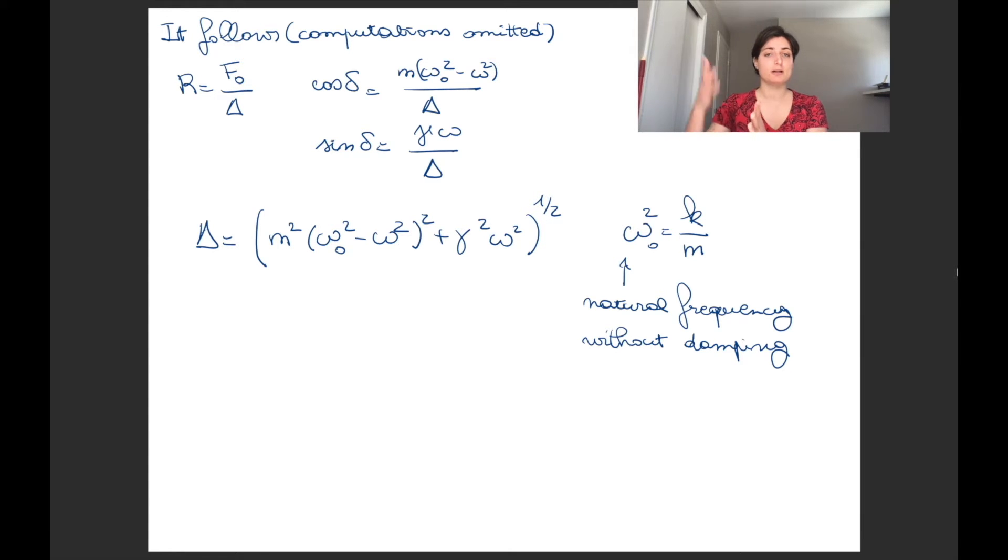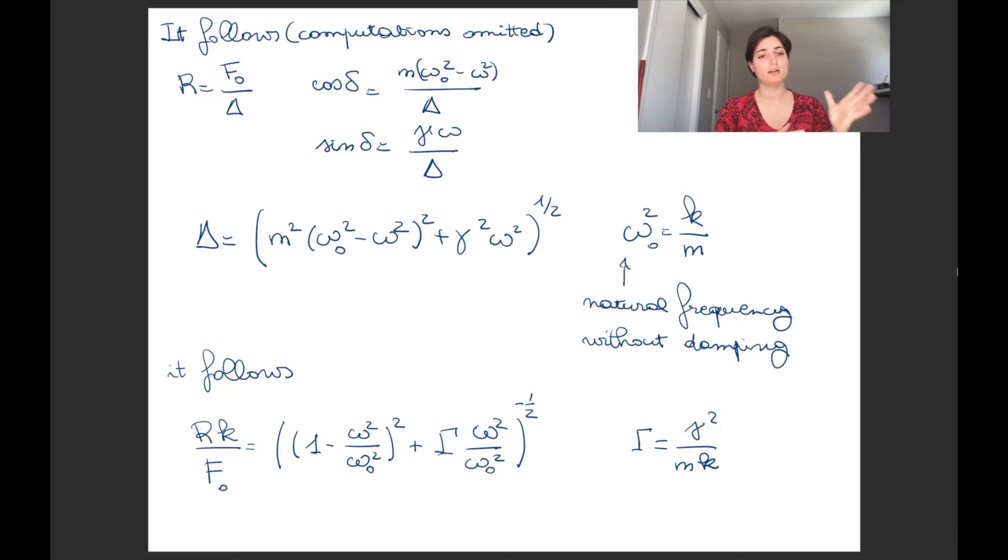We have this delta that is fairly important. It's square root of m^2 times the square of (omega^2 - omega_naught^2) plus gamma^2 omega^2. Omega_naught^2 is a natural frequency that we would have in the spring system if we wouldn't have damping. So it's k divided by m.